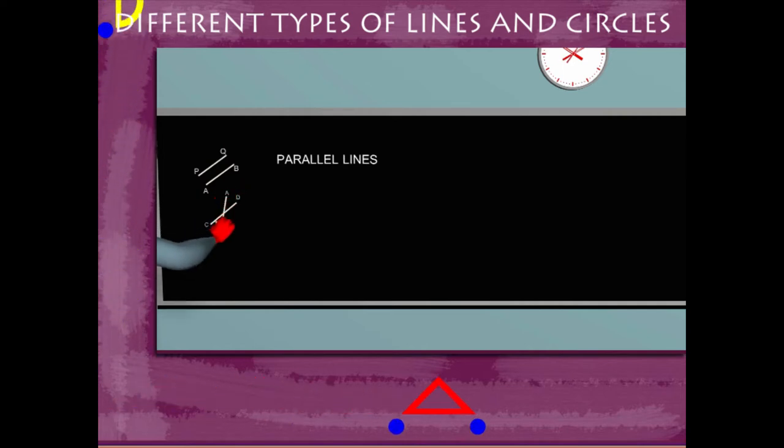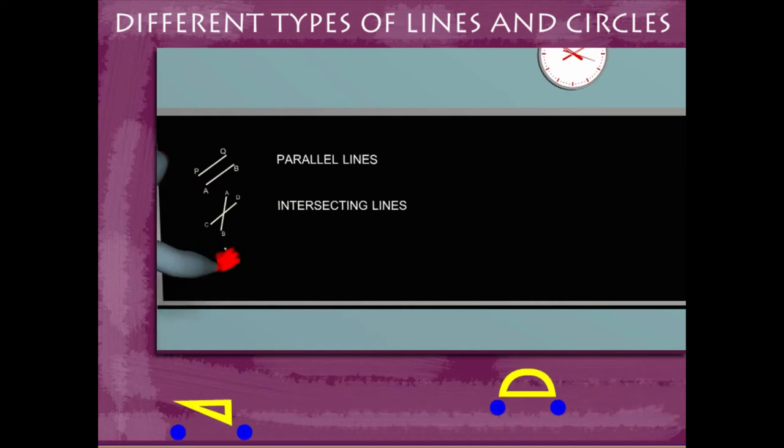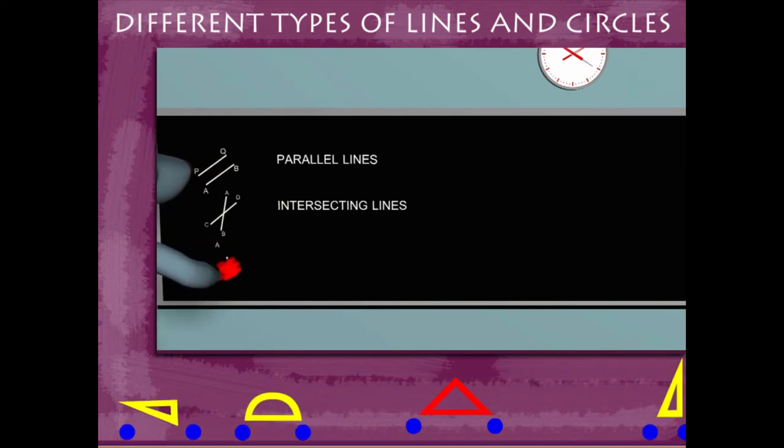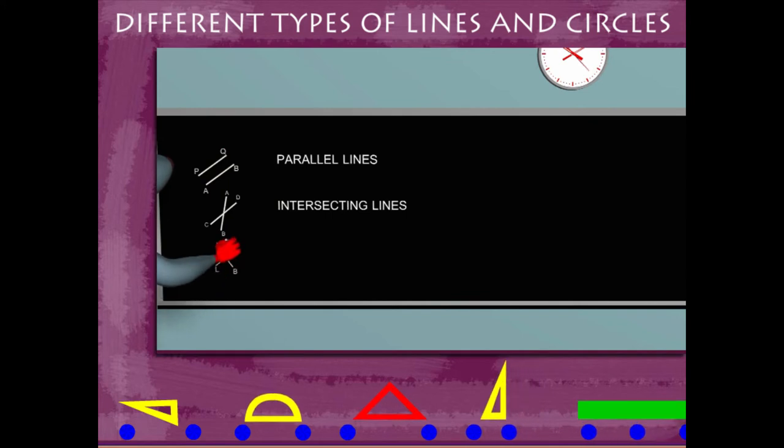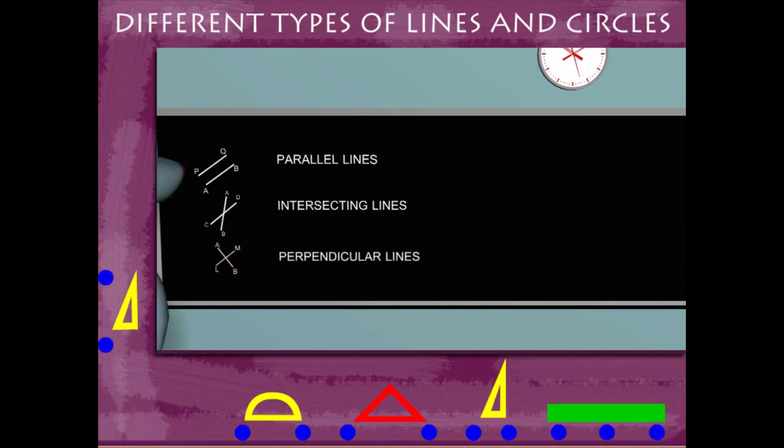The next two line segments cut each other at a point and are called intersecting lines. The third pair of line segments cut each other at right angles and are called perpendicular lines.